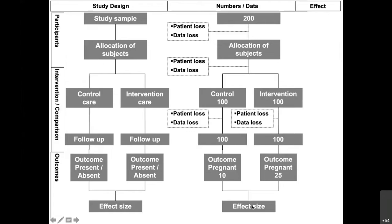We're going to take a hypothetical study where a group of 200 infertile couples, in a study with no data losses, were followed up. Under intervention, 25 became pregnant, and under control, 10 became pregnant. From this data we will calculate in a very simple way the effect size.